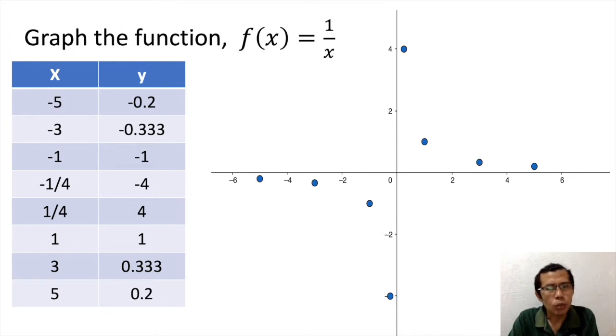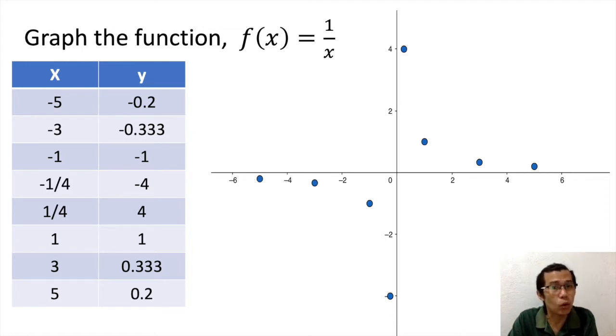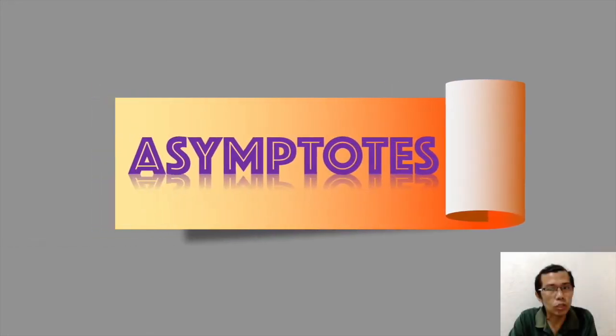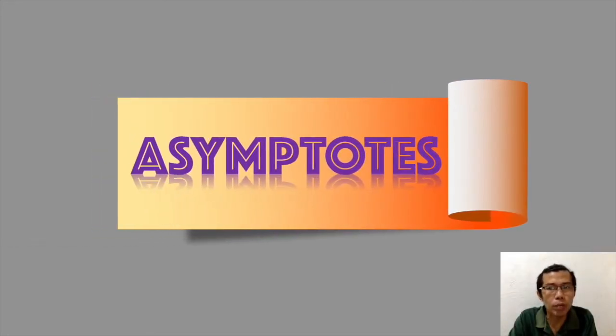Now, the questions we need to answer are: will our coordinates be enough to finish the graph? And number two, will the graph cross the x or y axis? So this topic will answer those questions, but also aids to comprehend the nature of the graph of the rational function. This particular term will be our main discussion for this lesson: asymptotes.